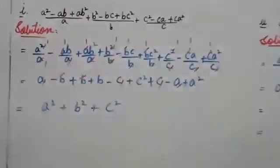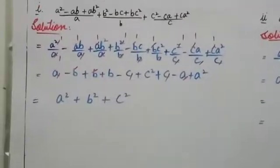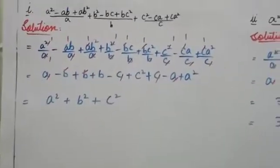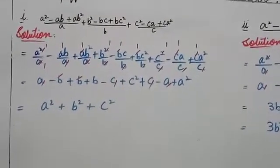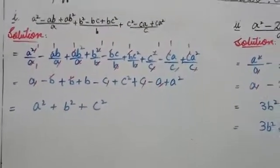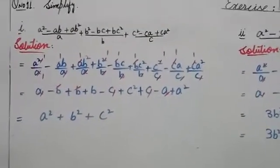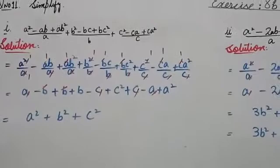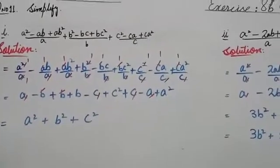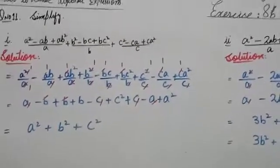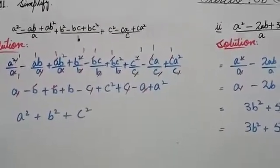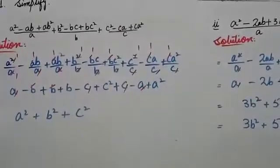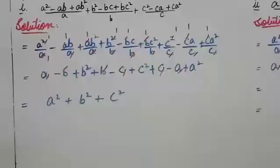So the rest of the value after cancelling is a. Similarly, for the third term ab² by a: a cancels, leaving b². So the result for the first fraction is a minus b plus b².